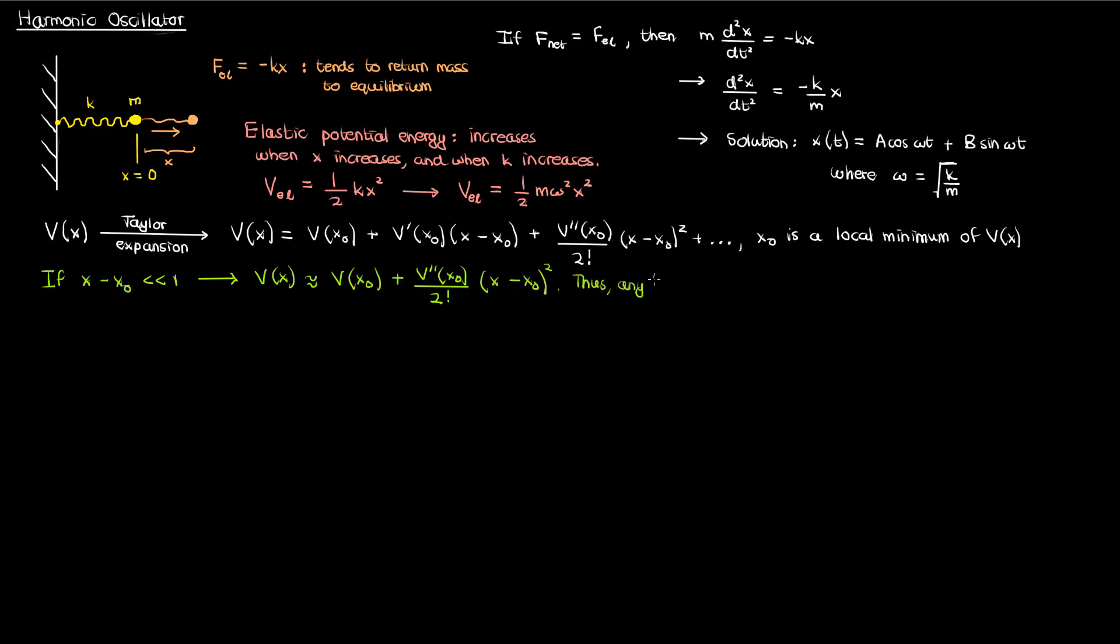So when the amplitude of my oscillations is small enough then I can approximate any nice generic potential as a quadratic function which is another reason it's important to solve Schrödinger's equation for a quadratic potential for the harmonic oscillator.